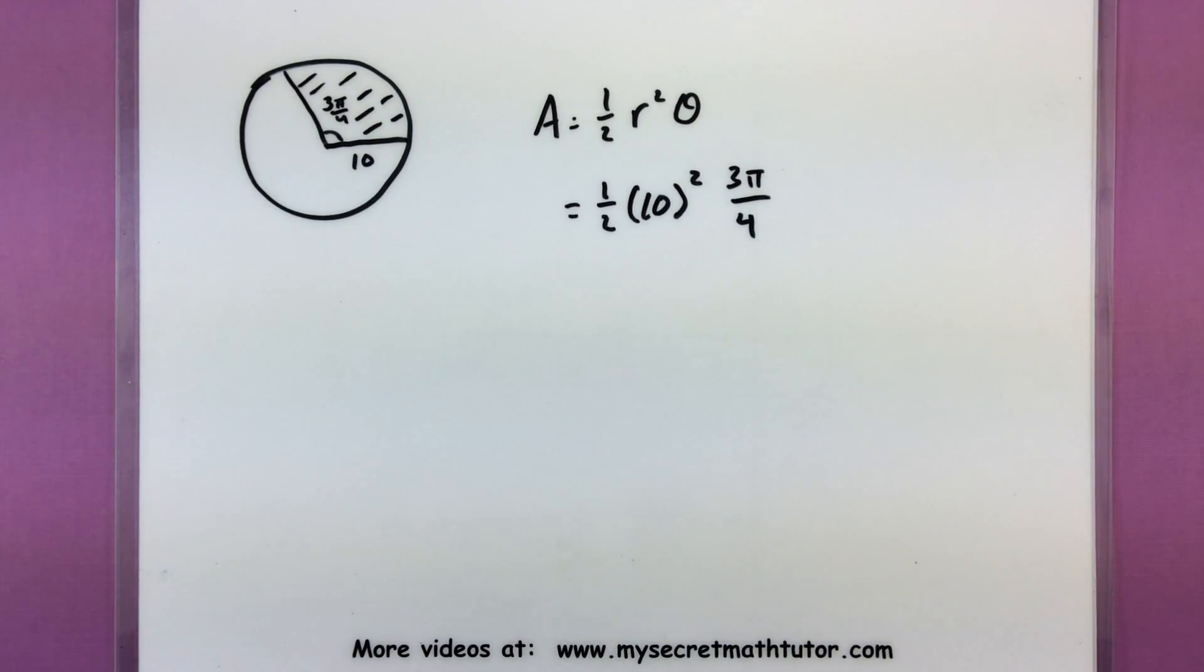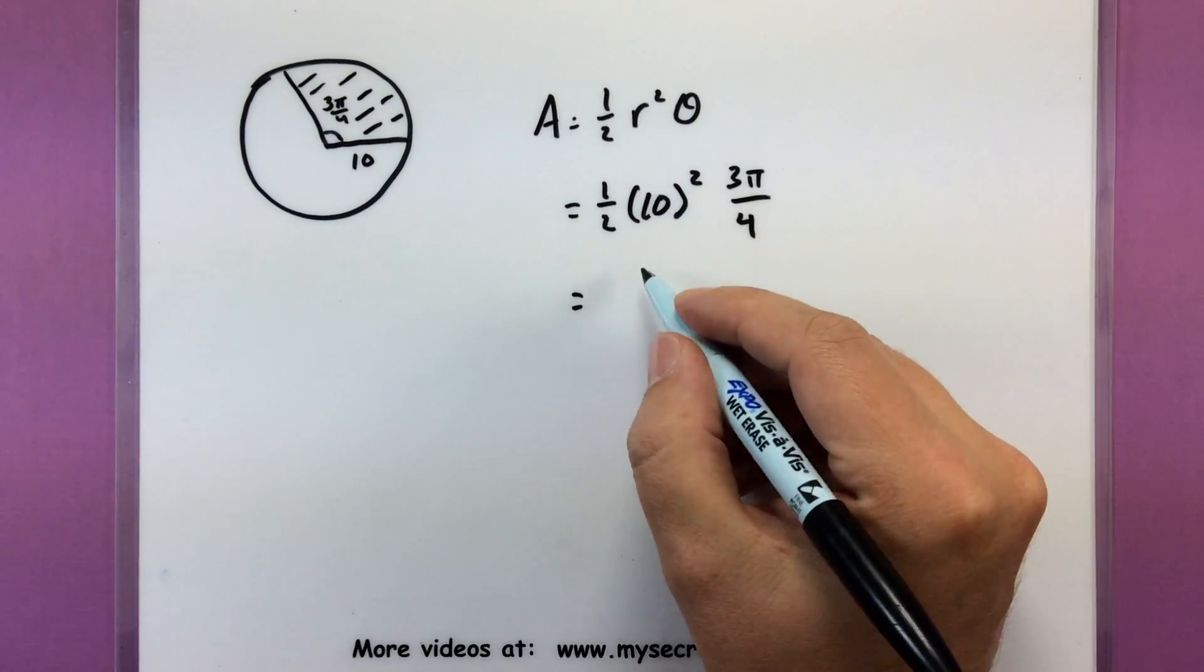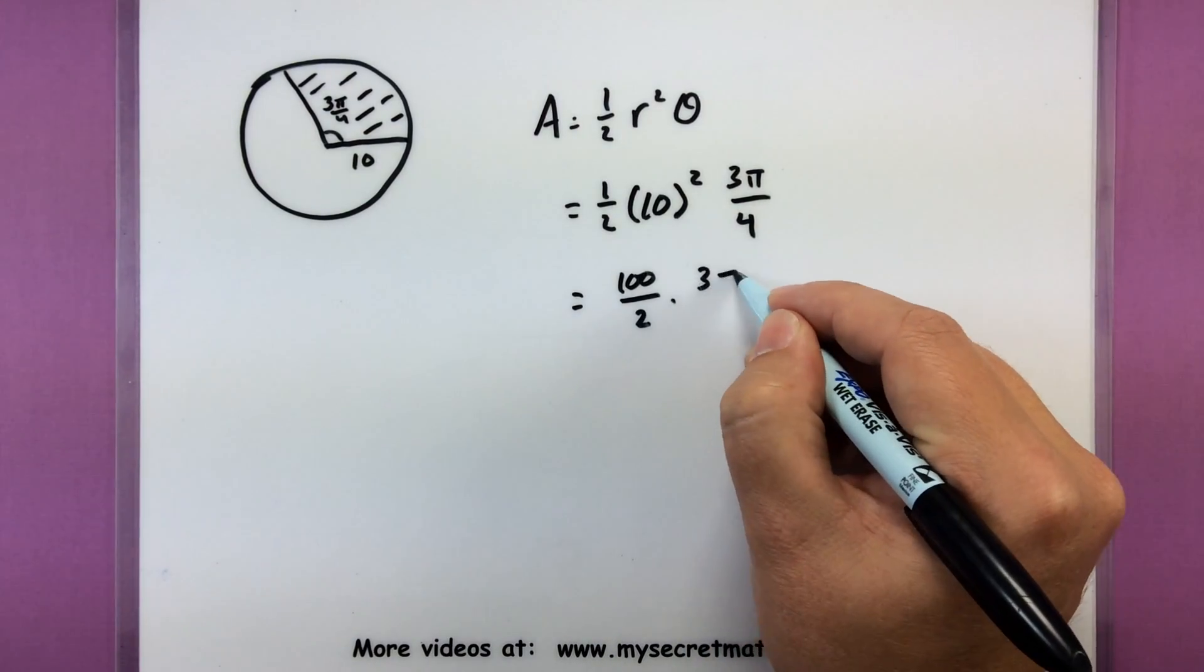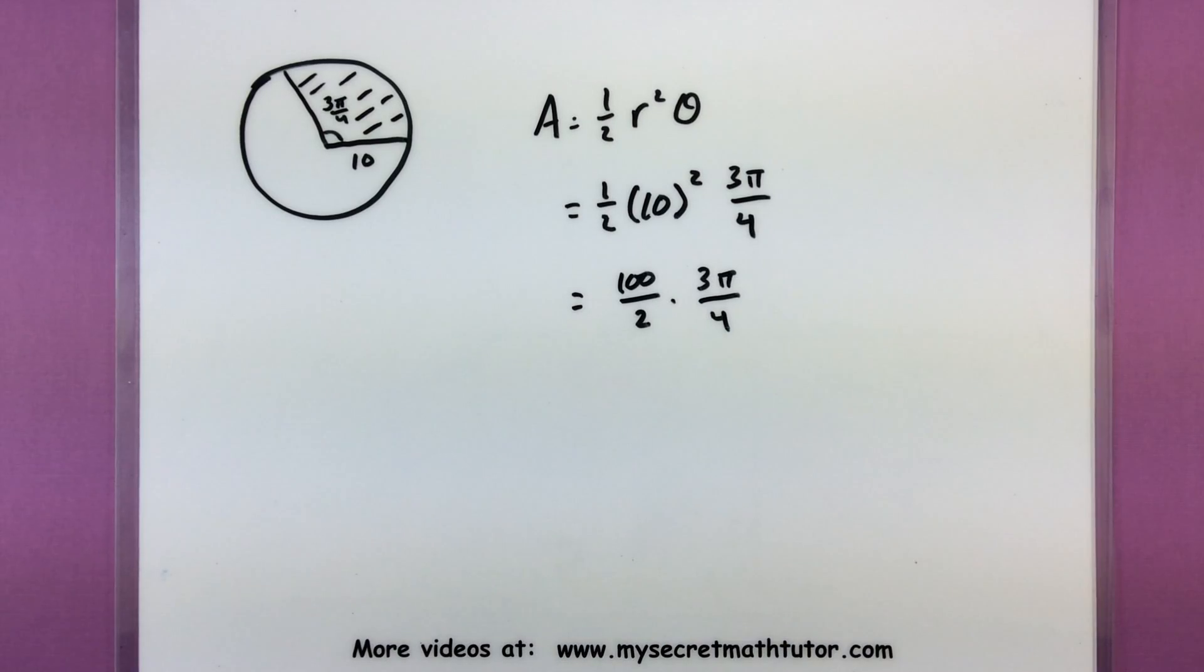And now we work to simplify this. So 10 squared is 100, that'll be divided by 2, and we still have our 3π divided by 4.